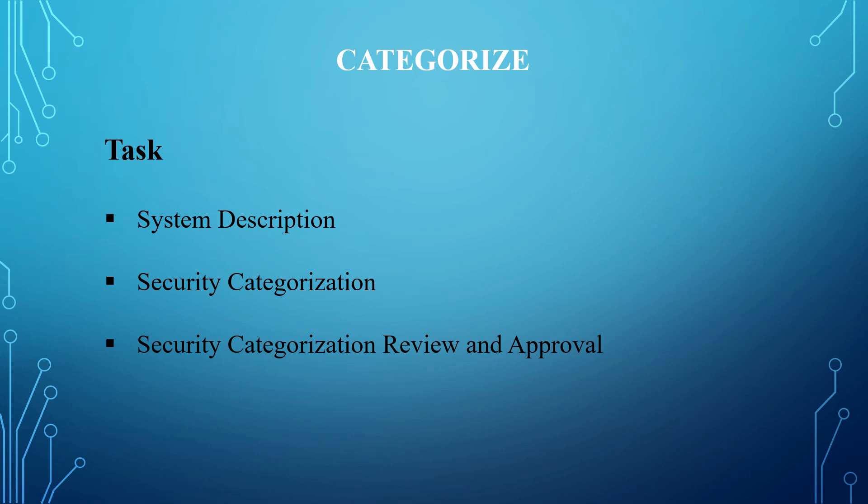There are various tasks identified under the categorized step. The first one is the system description. Under this task, the system characteristics are documented.